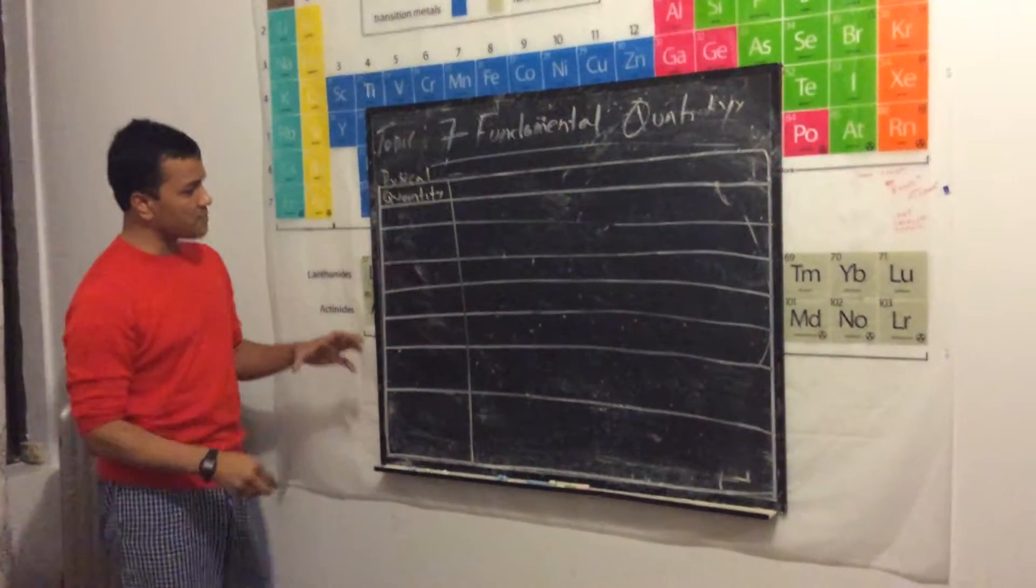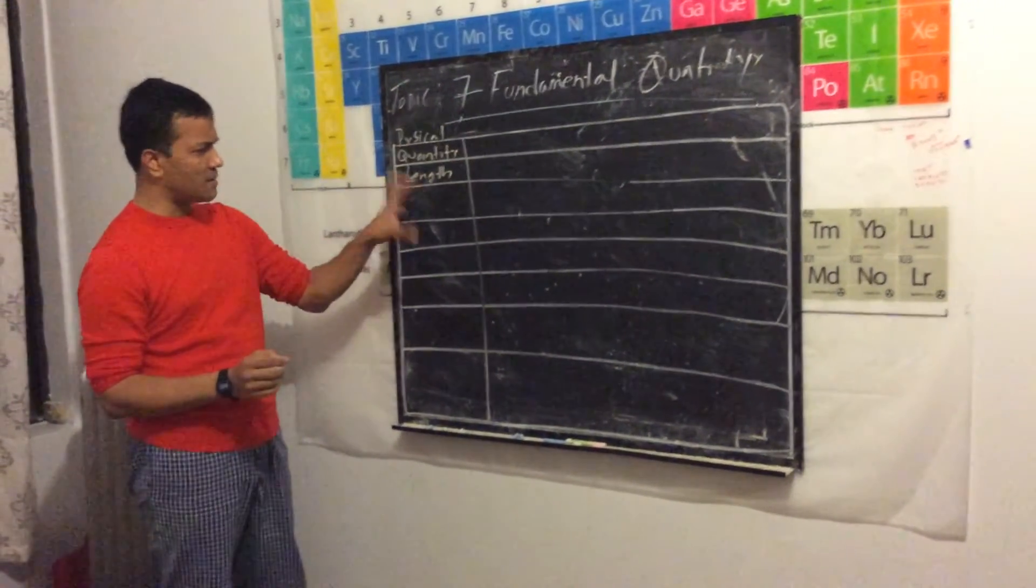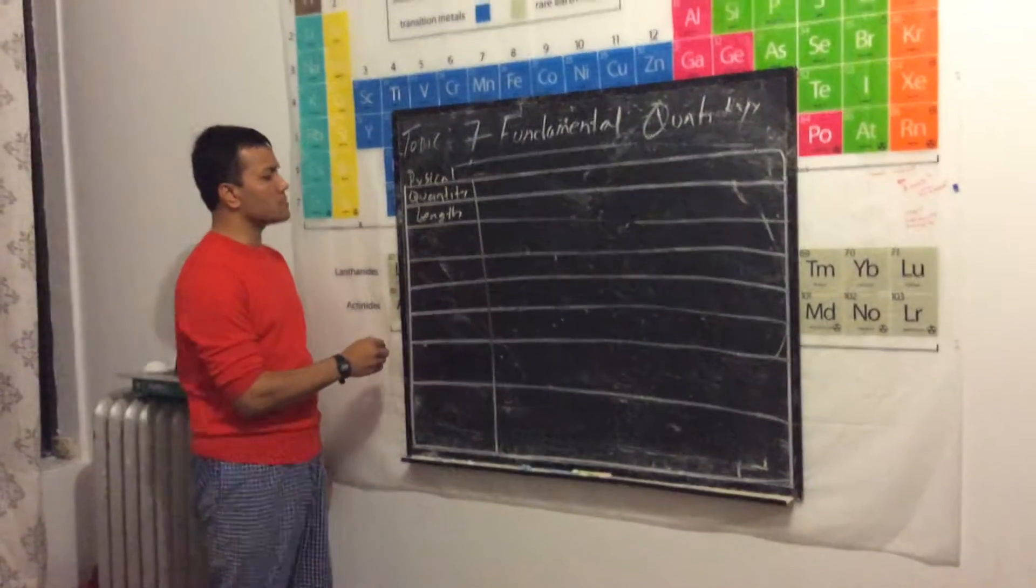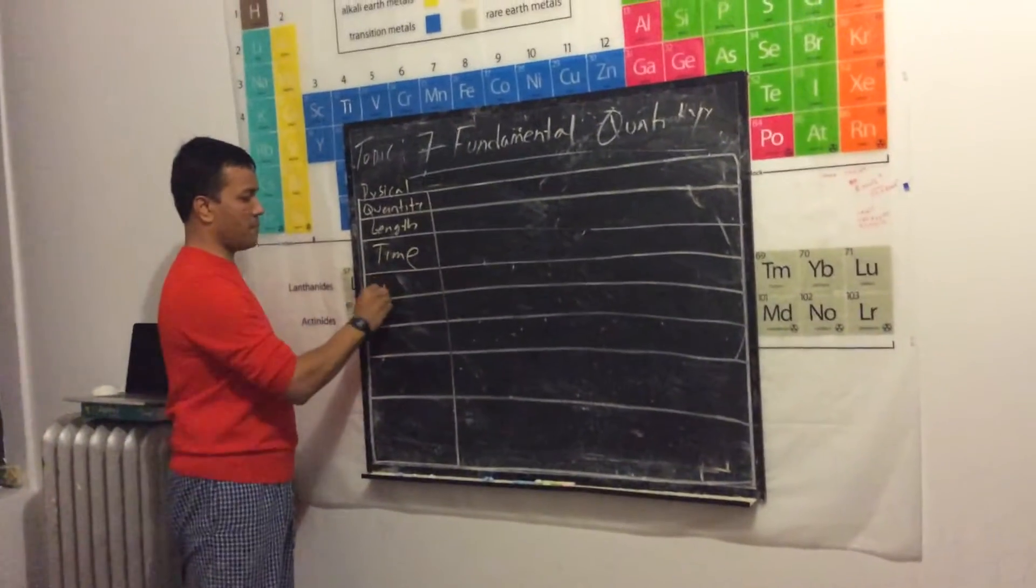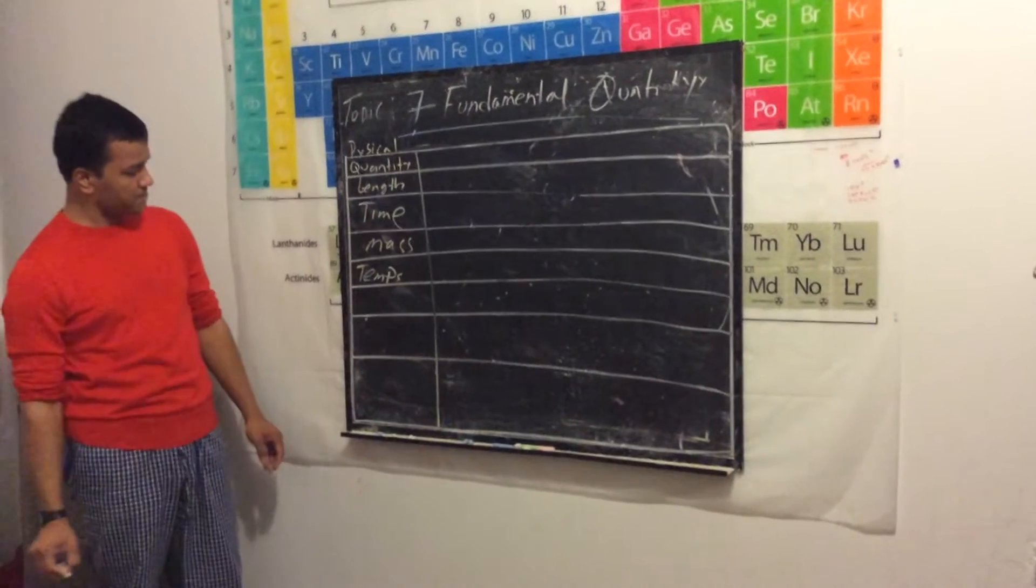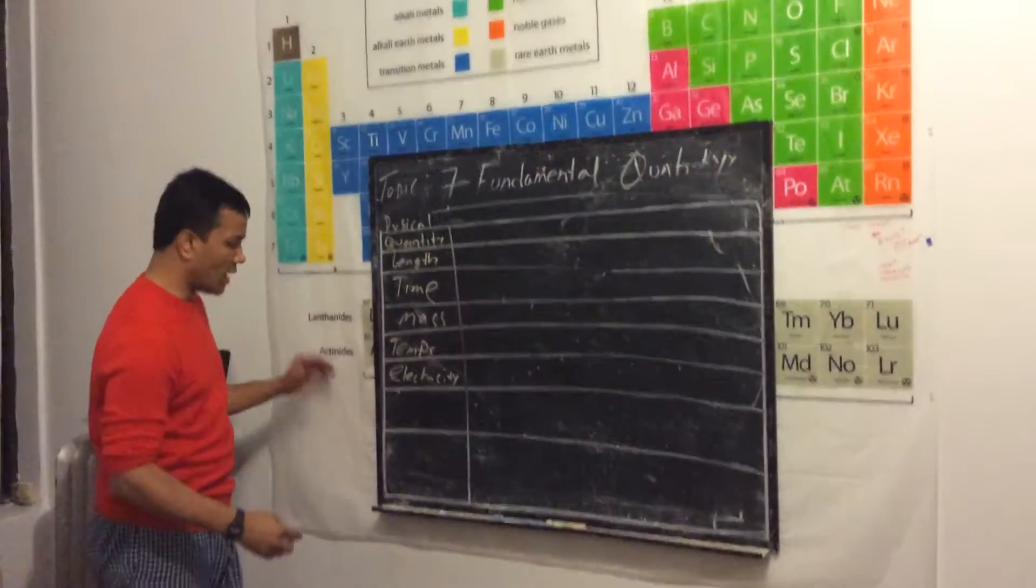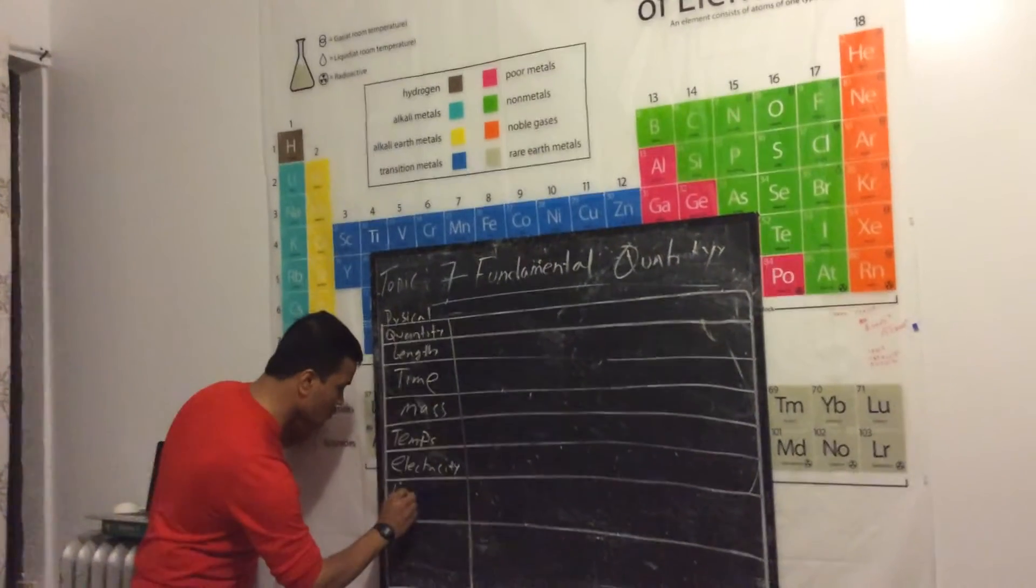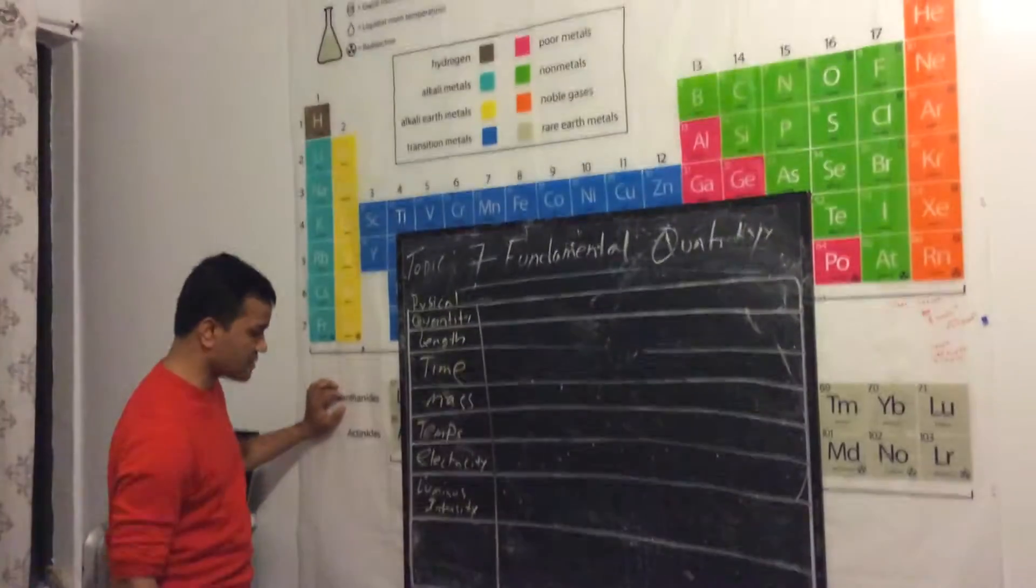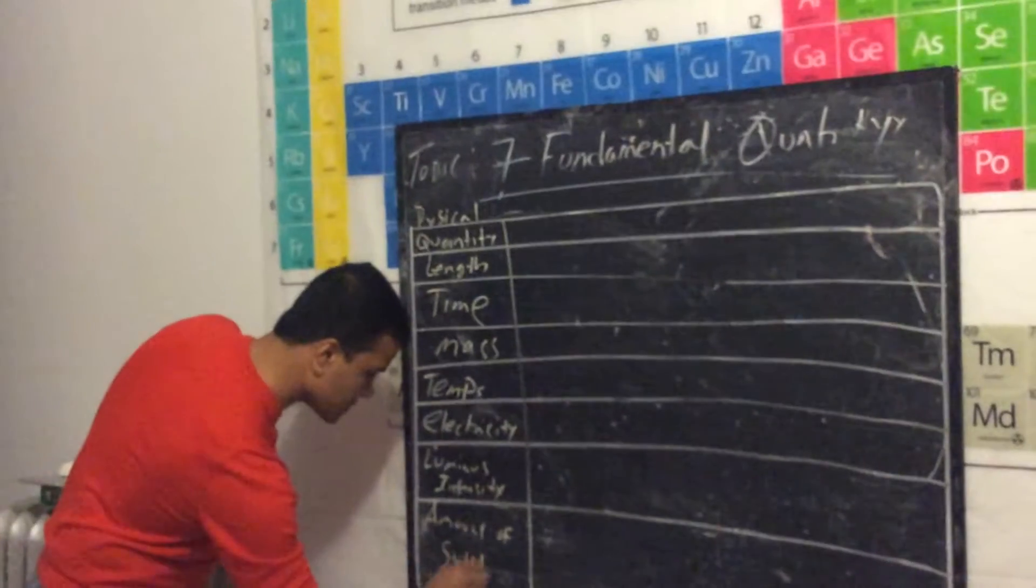The first one is length. The second one could be anything from these seven, but I'm going to put the ones we use most frequently on top: time and mass, temperature, electricity, luminous intensity, and last but not least, amount of substance.